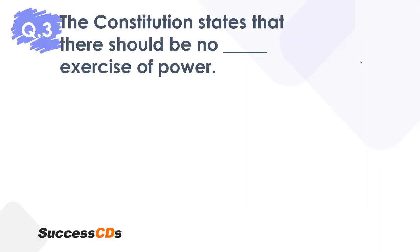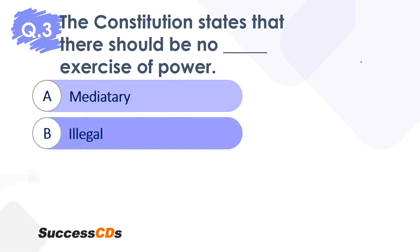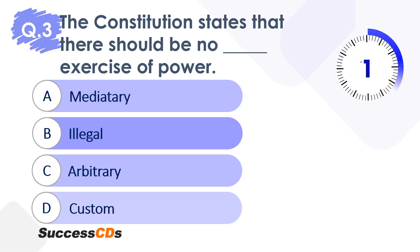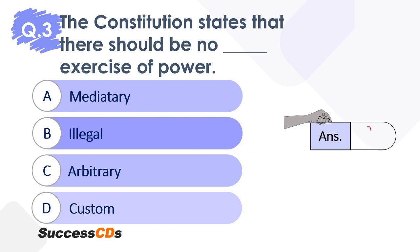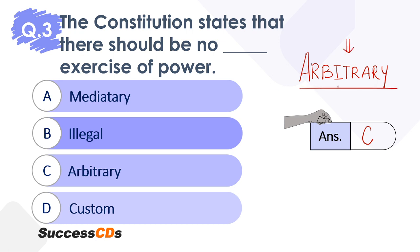Moving forward, question 3. The constitution states that there should be no dash exercise of power. Options being: mandatory, illegal, arbitrary, or custom. Your time begins now. What does your constitution refrain you from? What kind of power cannot be exercised? The correct answer, I hope all of you have answered it as C — arbitrary. It means you cannot apply the law in different ways based on your whims and fancies. There should be no arbitrary exercise of power. Any kind of law should be equally followed by everybody. Correct answer is option C.